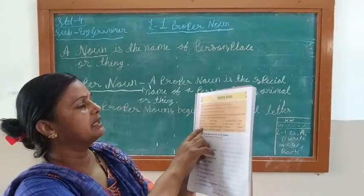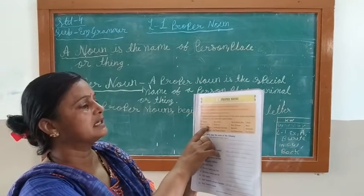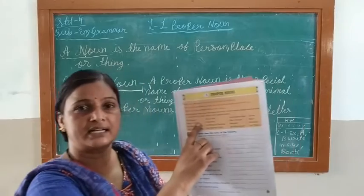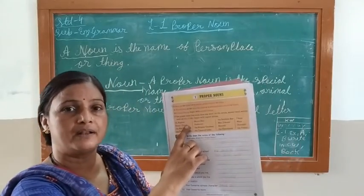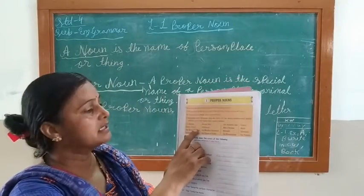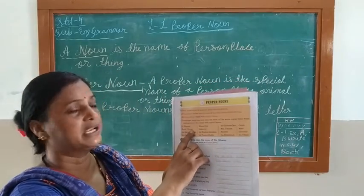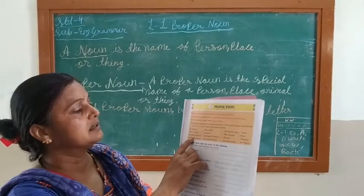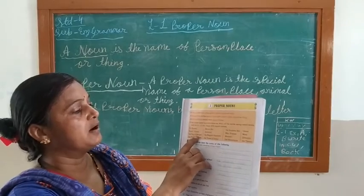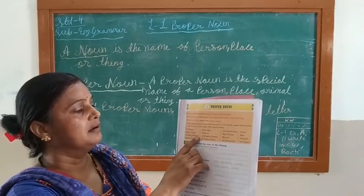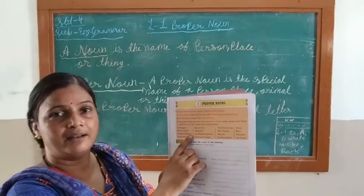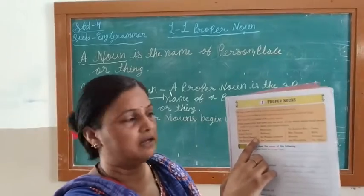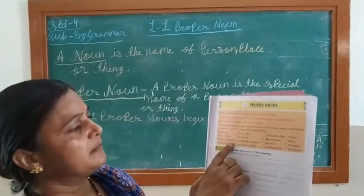Here is 'Royal Circus.' There are so many circuses, but 'Royal Circus' is a proper name — that is why we call it Royal Circus. 'The Bay of Bengal' — Bengal is a name given to that particular bay.